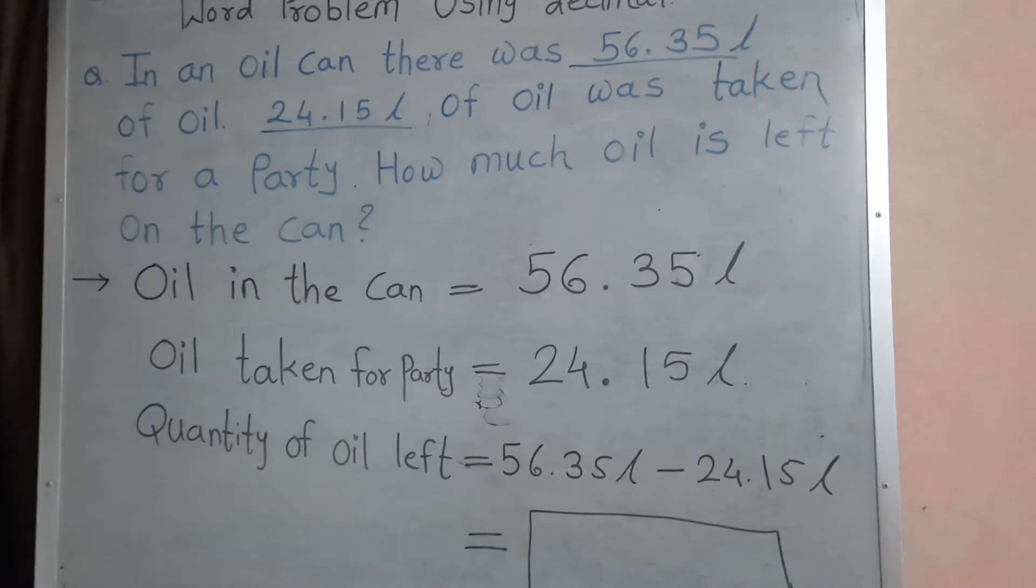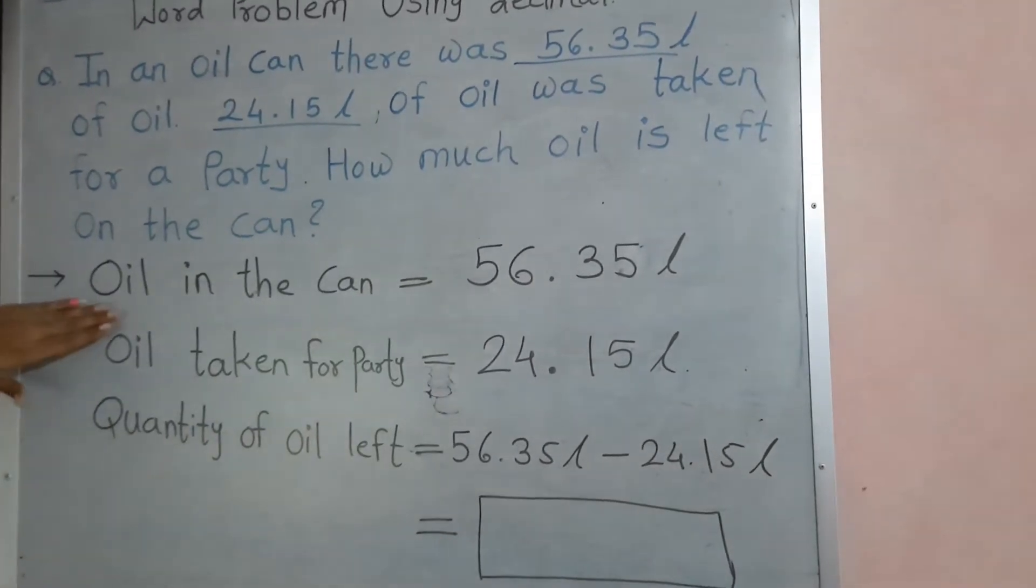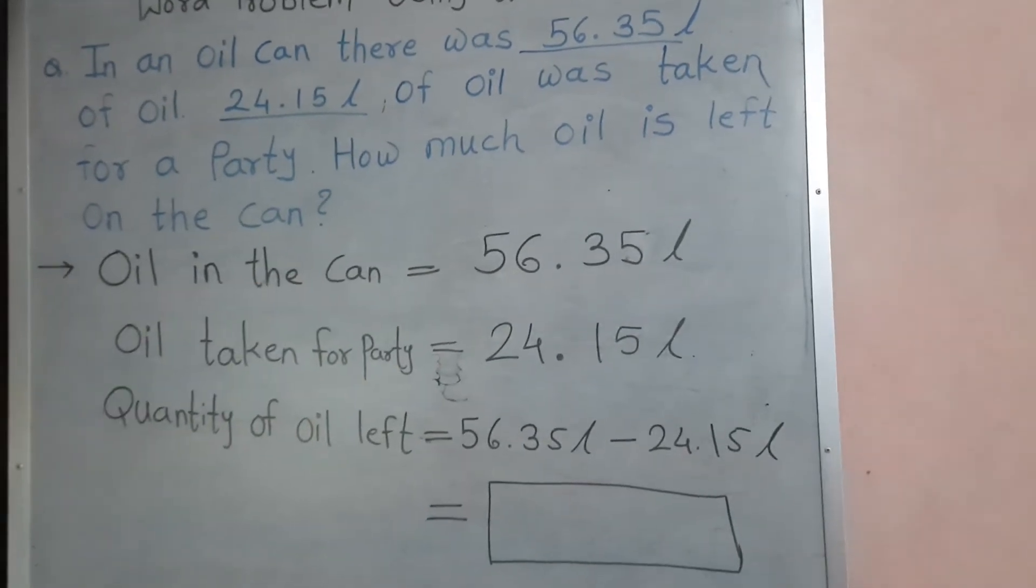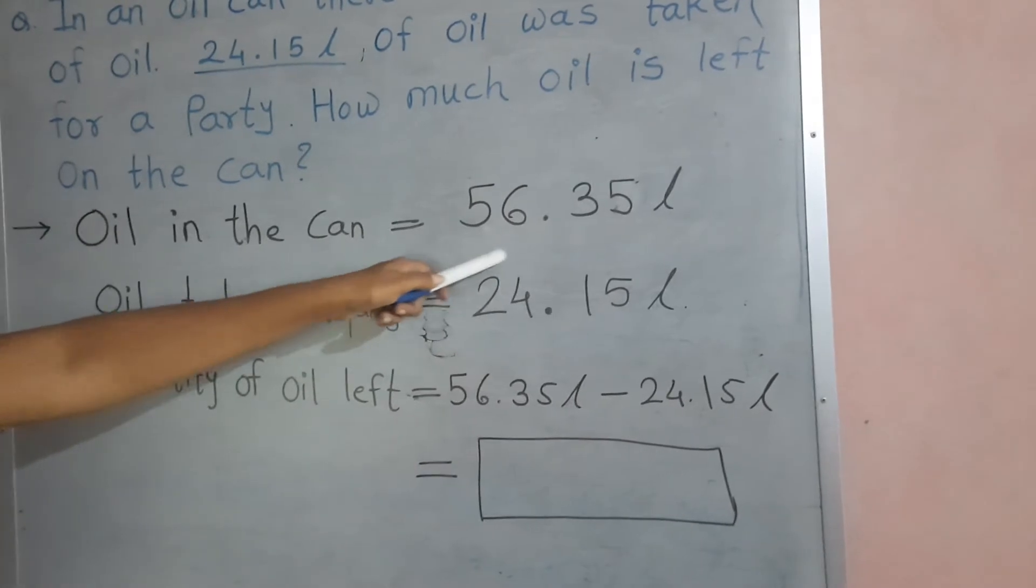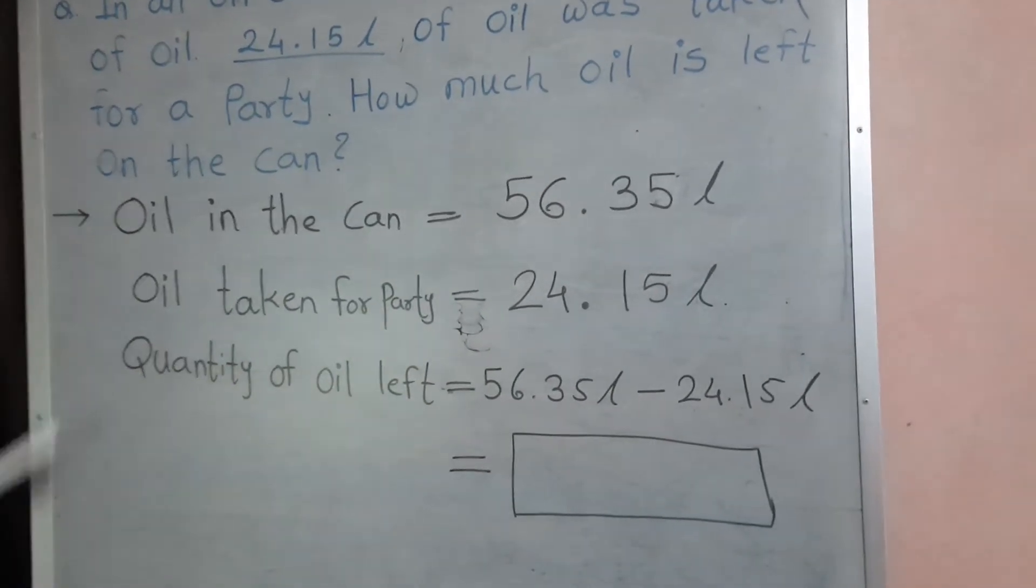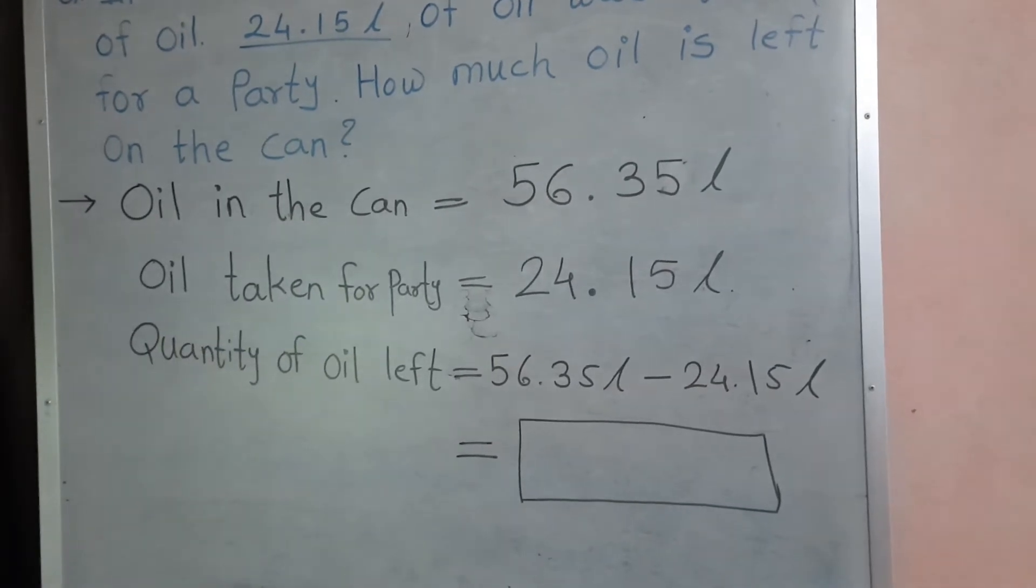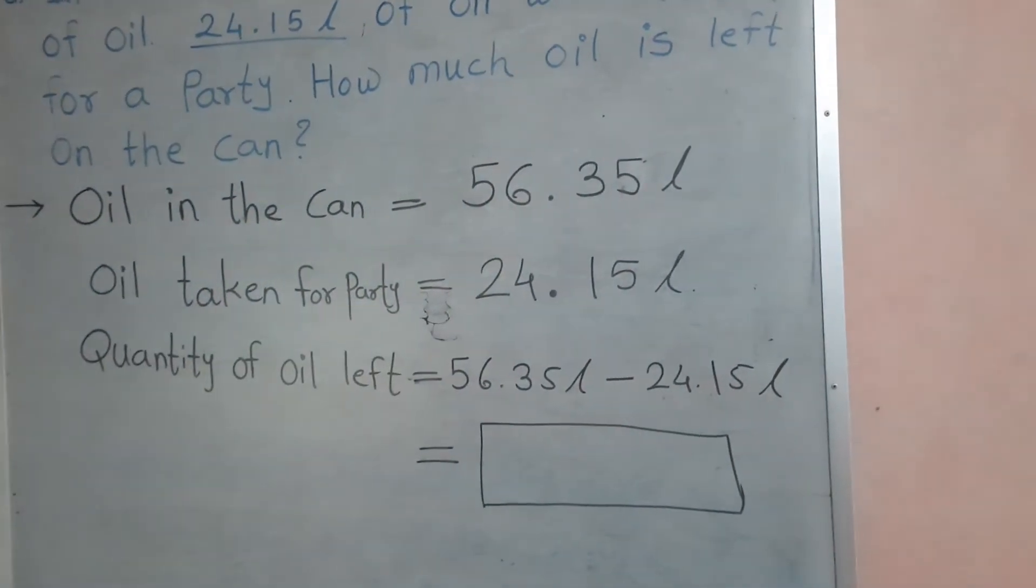That is the word problem. We're using wording. First we write here, oil in the can. How much oil in that can? 56.35 litre. And oil is taken for party. How many? 24.15 litre.